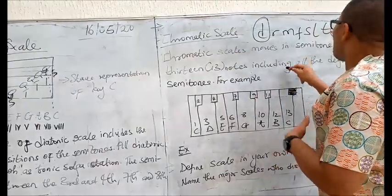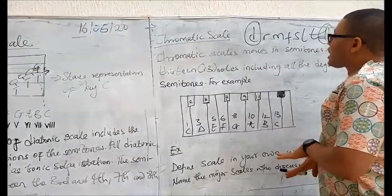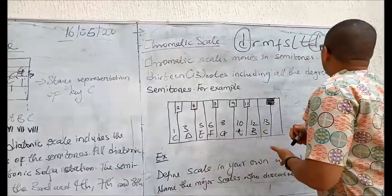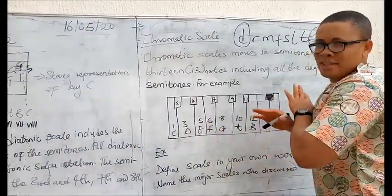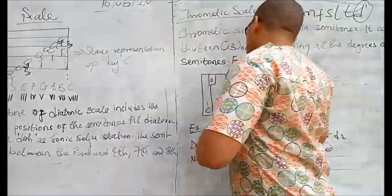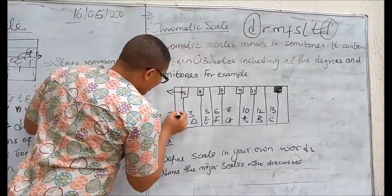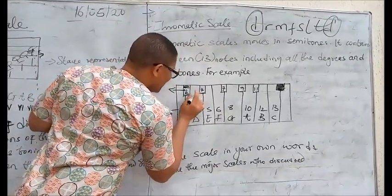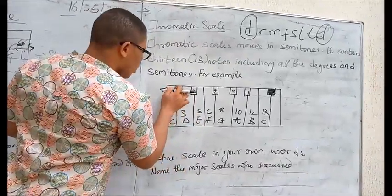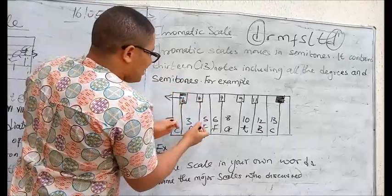The chromatic scale moves in semitones. It contains 13 notes including all the degrees of the semitones. This one comprises both the white notes and the black notes. This is supposed to be the shaded keyboard - you see the black notes and the white notes. The chromatic scale is comprised of both.